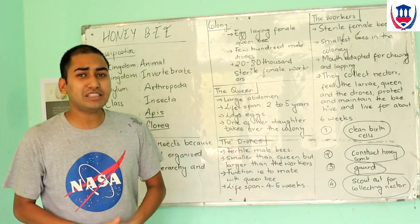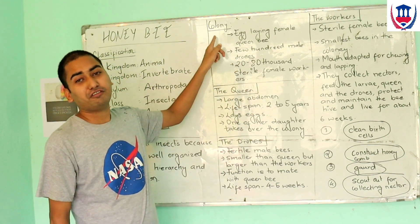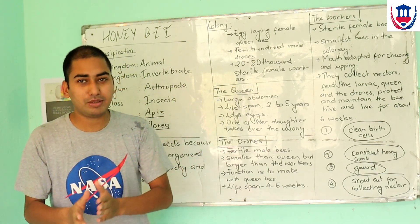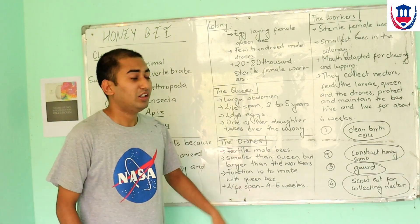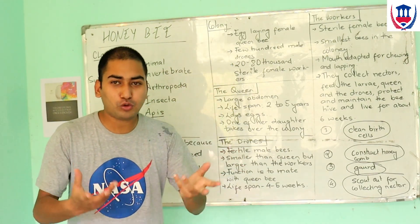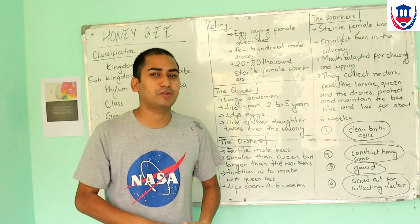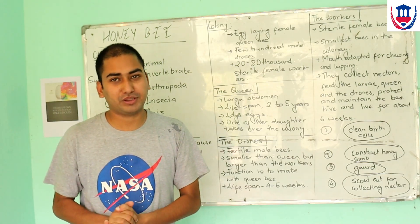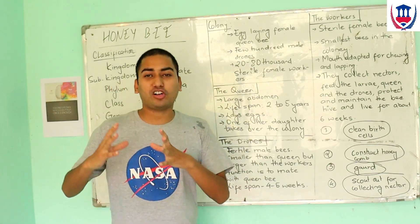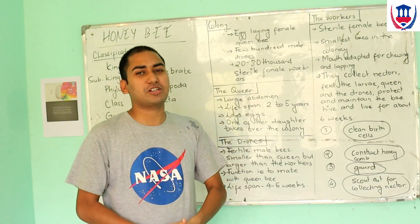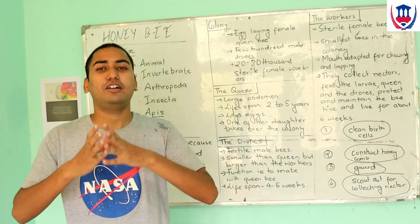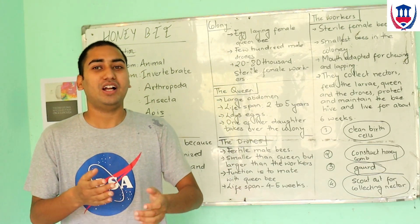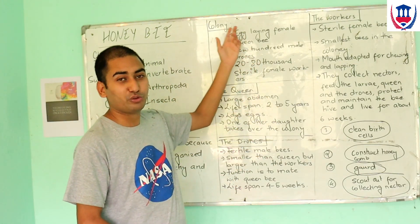In the colony, we have an egg-laying fertile female, which is the queen. In general, there are a few hundred male drones. There are around 20,000 or more workers. There are a number of different members, each with the same function divided among them. The queen bee leads the colony.